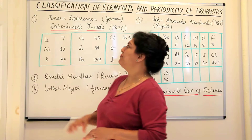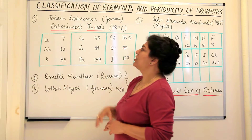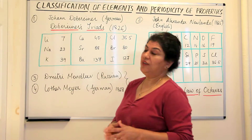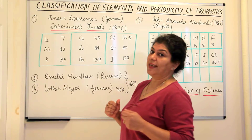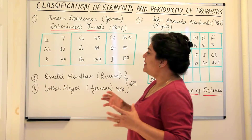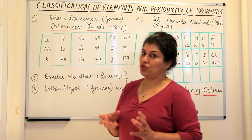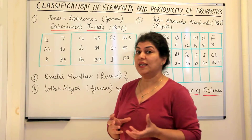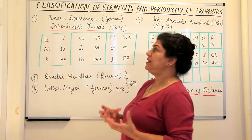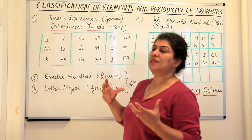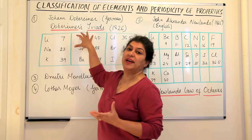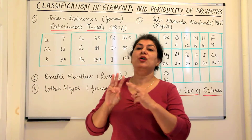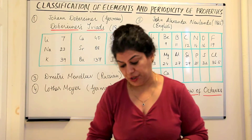So the first attempt was made by a scientist called Johan Dobereiner. He was a German scientist and he grouped three elements together according to their increasing atomic weights. These are famously known as Dobereiner's triads — triads because they were groups of three elements each.